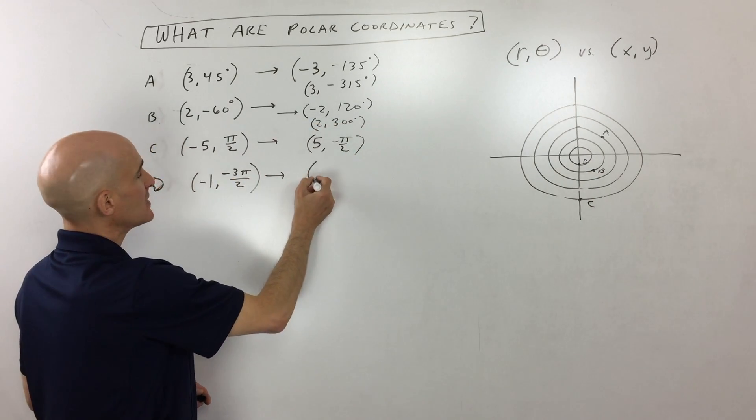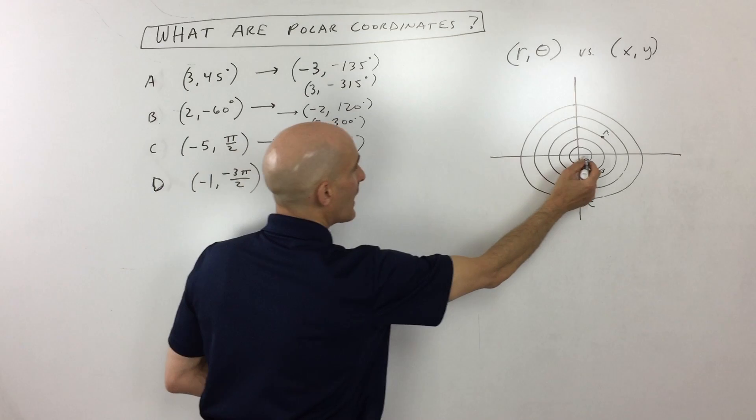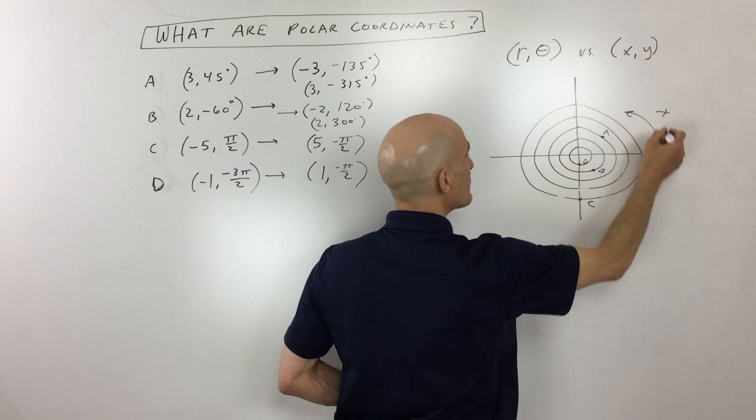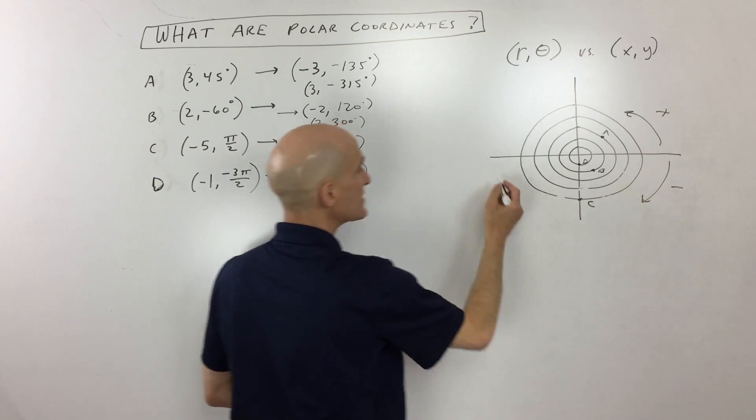Of course, you could go, let's see, you could go positive 1. And you could just go negative π/2. But again, remember, if you're going counterclockwise, that's positive. If you're going clockwise, that's negative.